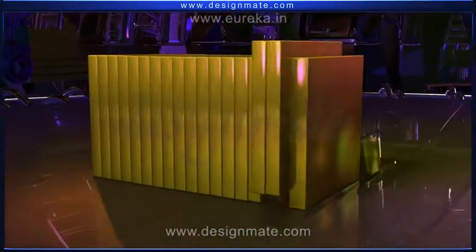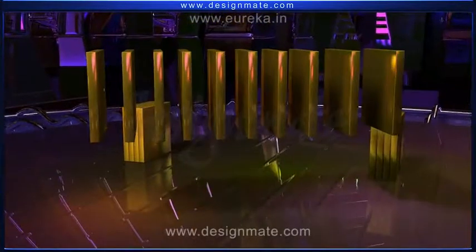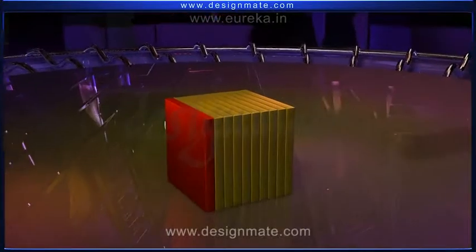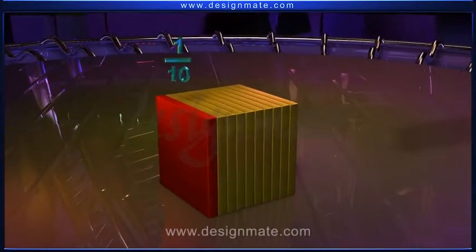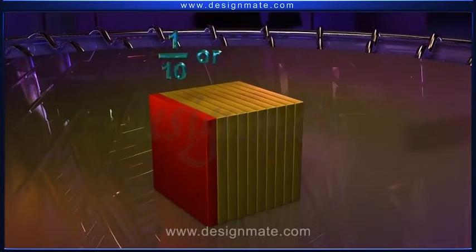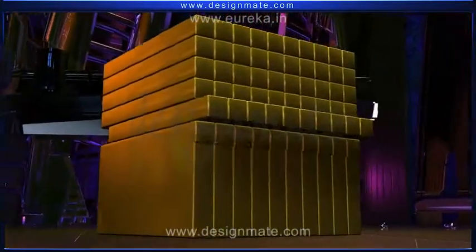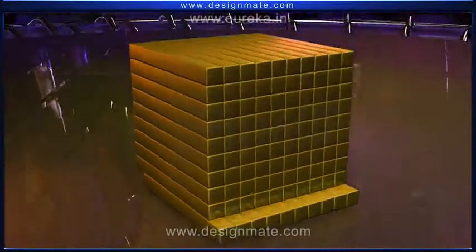On further slicing the cuboid and arranging ten blocks together will form a cube. One block will represent one upon ten, or one tenth, or 0.1. Now, divide each such block into ten equal parts.